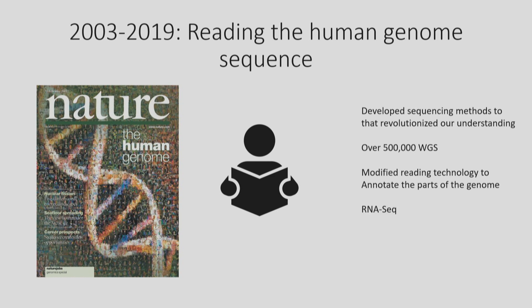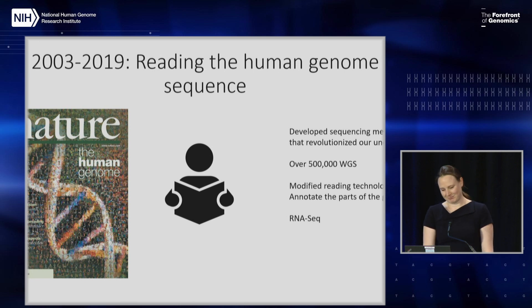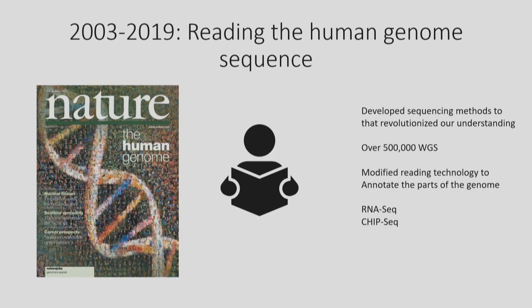RNA-seq is really reading the transcripts in a genome. Chip-seq is reading the parts of the DNA that are protected by proteins bound to the DNA. Hi-seq is reading the pieces of DNA that are near to each other in space. Single-cell technologies have advanced this further, and they really allow us to look at things not just in bulk, but also at single-cell resolution.